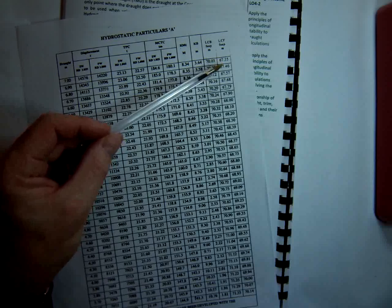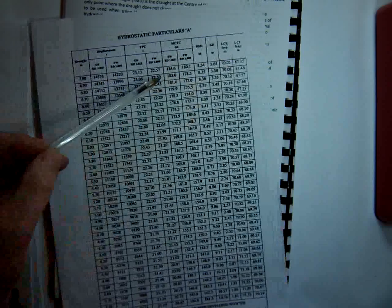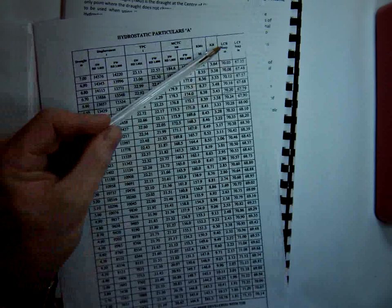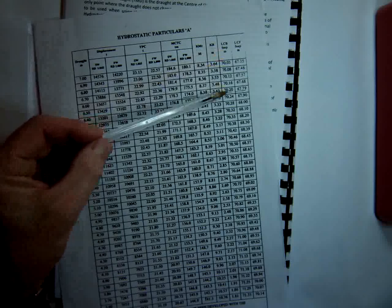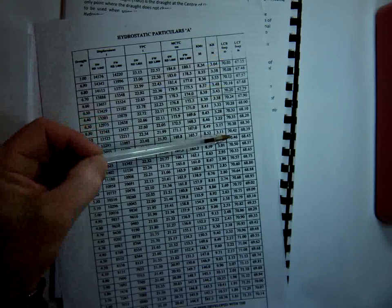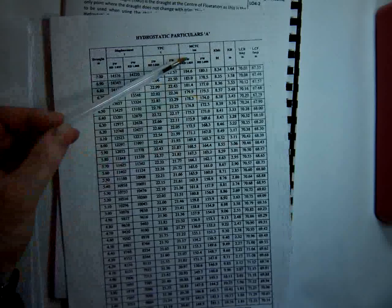And LCF, you would get from the tables. And if we have a look at other values here, that you need LCB, which is the longitudinal centre of buoyancy, that's obtained from the tables. And the other two values that we obtain, one is MCTC.